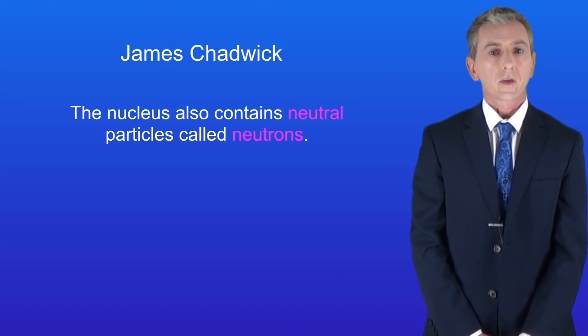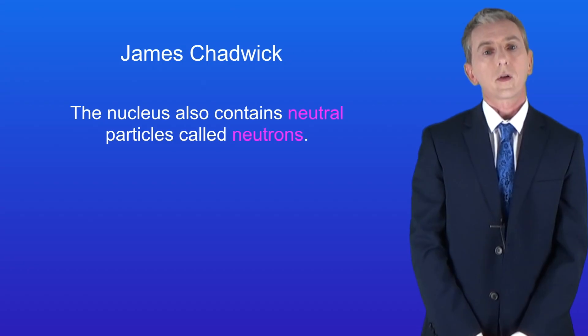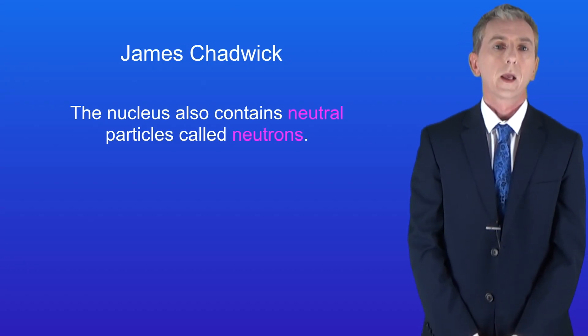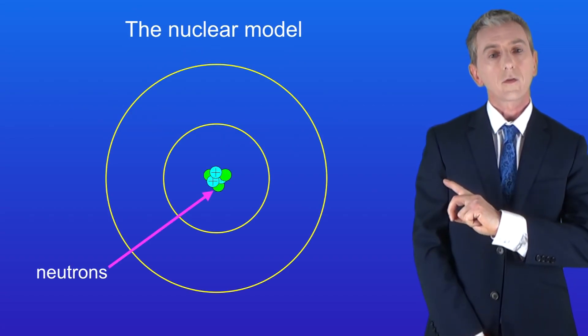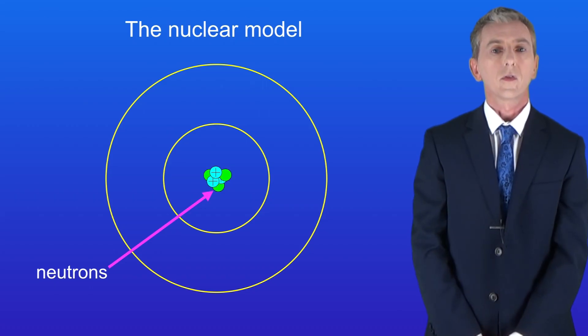Now around 20 years after the nuclear model was proposed the scientist James Chadwick made one final important discovery. Chadwick discovered that the nucleus also contains neutral particles which he called neutrons. So here's the final version of the nuclear model with the neutrons in the nucleus.